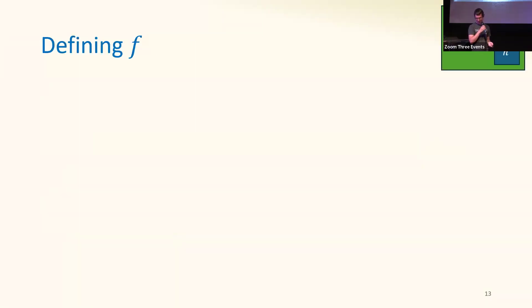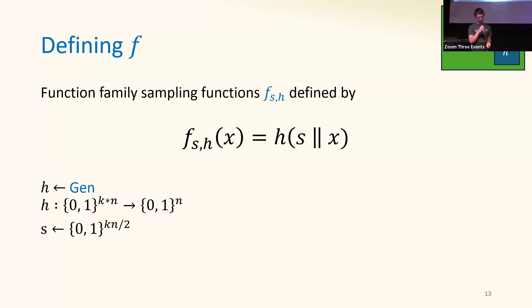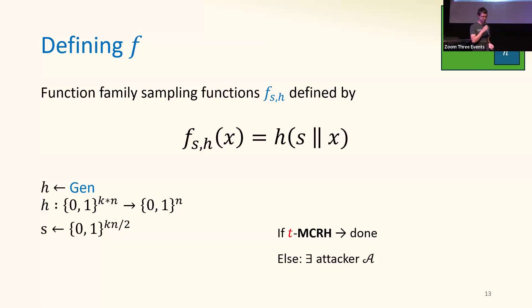The functions in family F are indexed by functions H from the original family and strings S. Taking an input X, they prepend S to this input and then hash it with H. H is a function from the original family mapping K1-bit inputs to M-bit outputs, and S is half the length of its inputs. If this is a T-MCRH, then it has half the shrinkage of the original family. If not, we have an attacker against this function family, and we assume for the proof that this attacker is perfect — it succeeds with probability 1. We'll use this attacker to define the functions G.